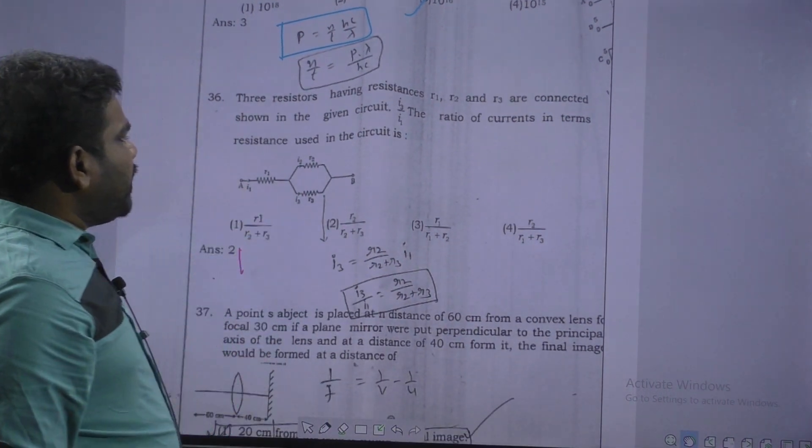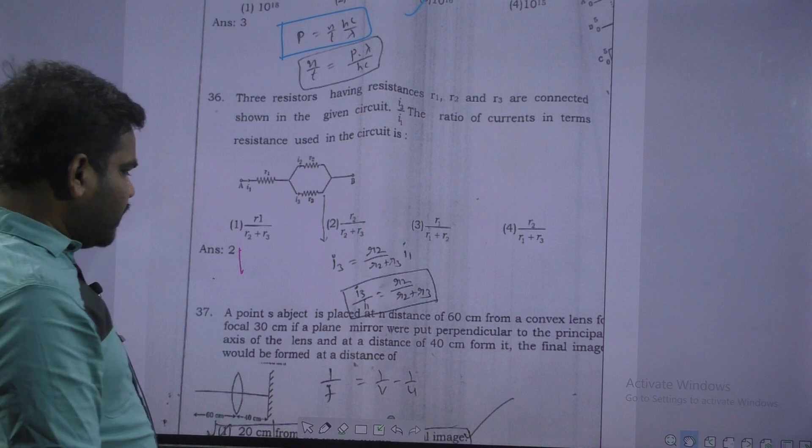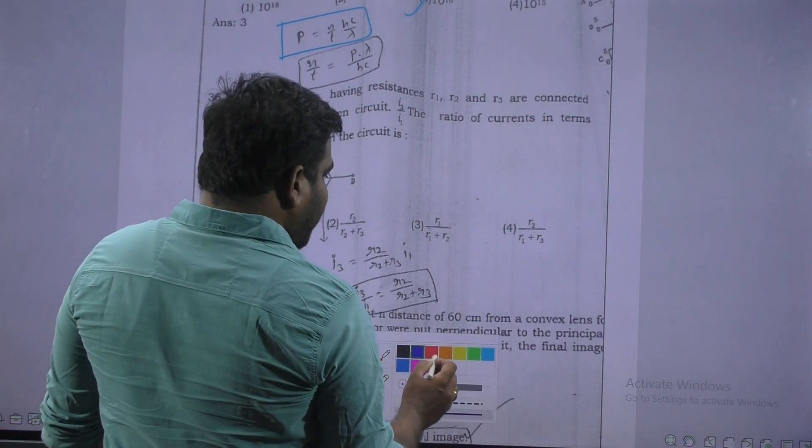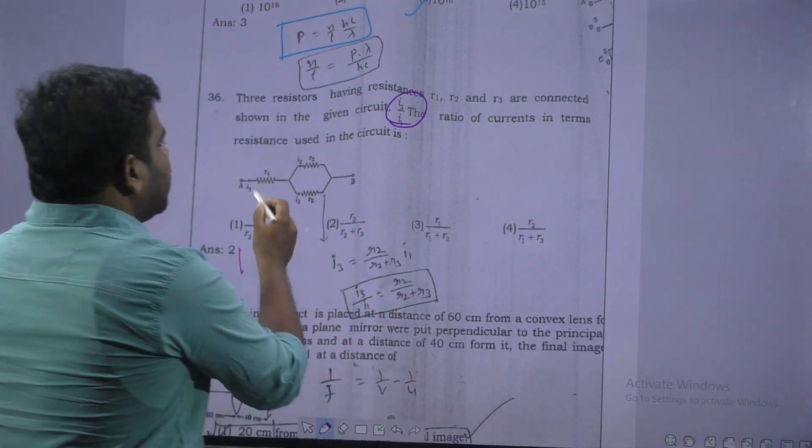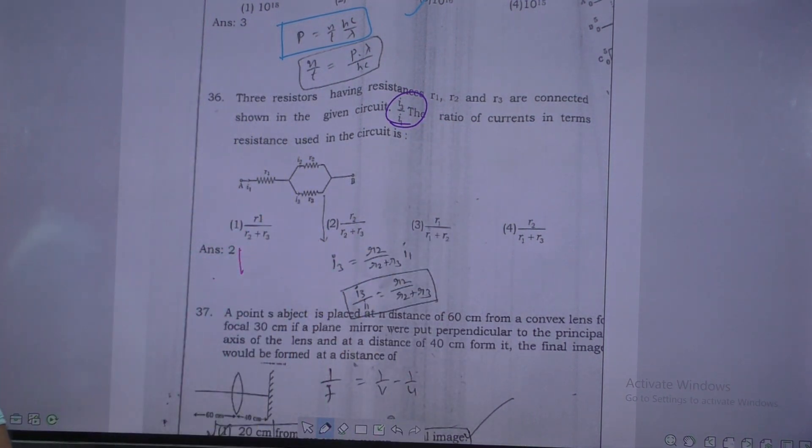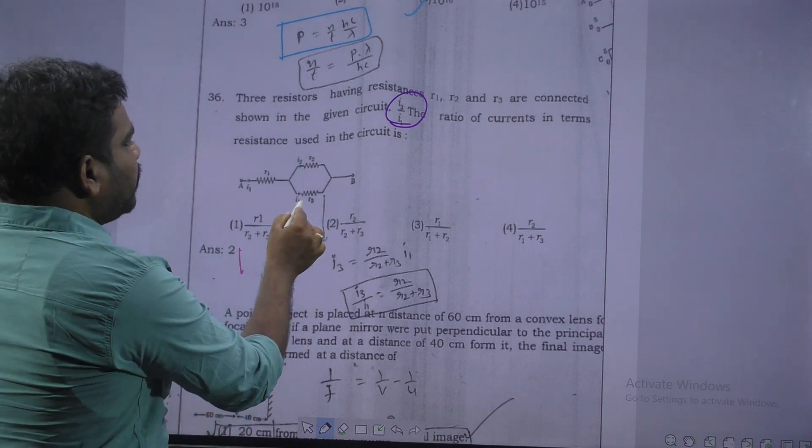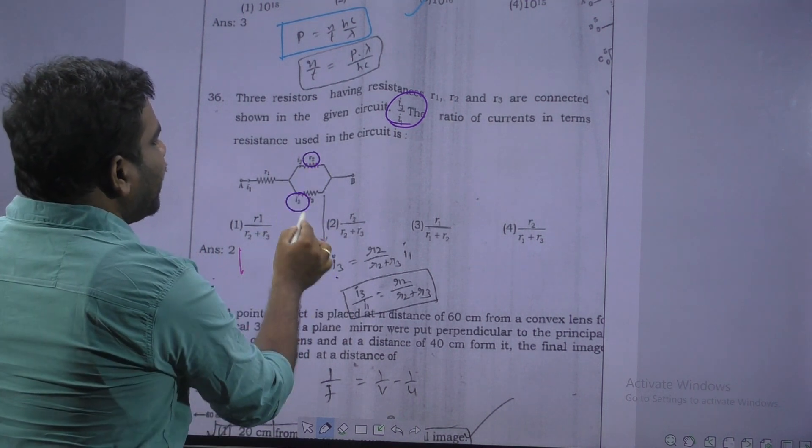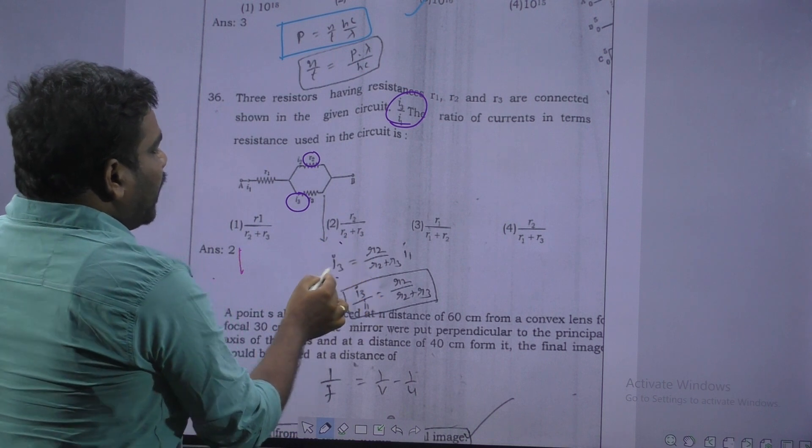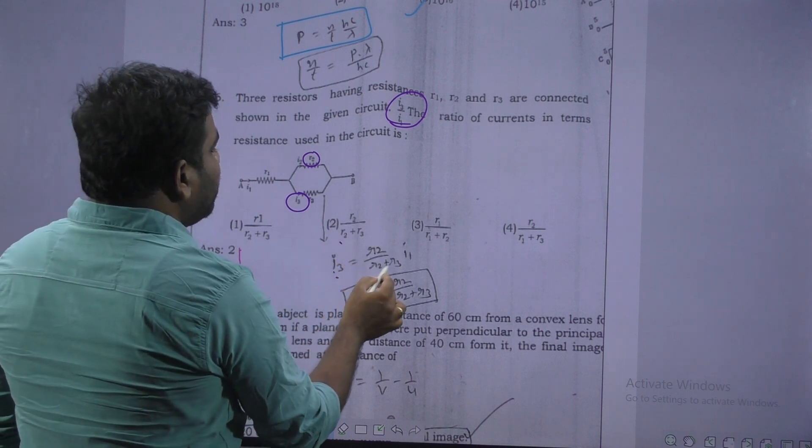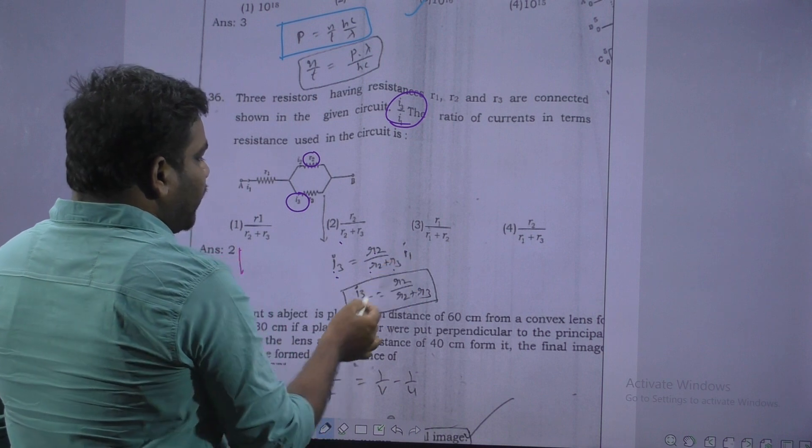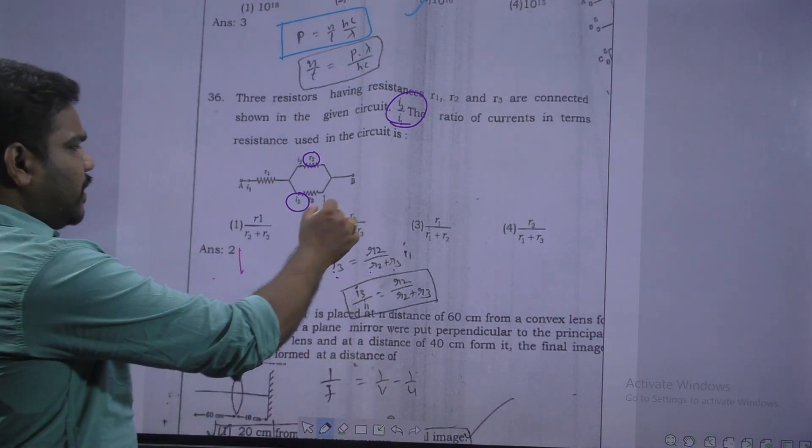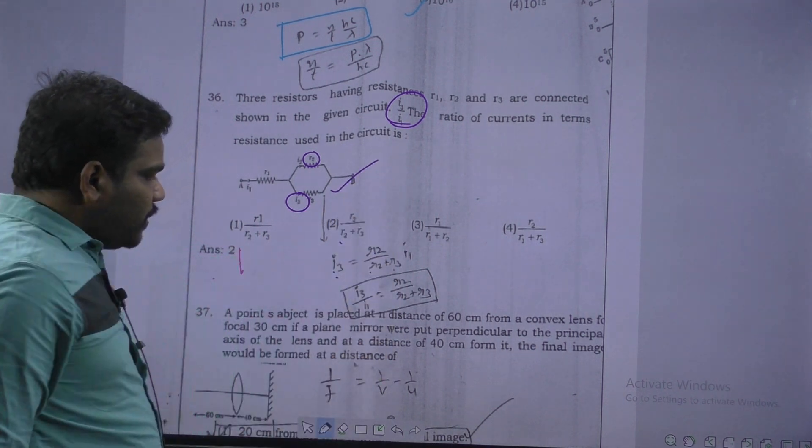Next question. This problem I3 by I1 is asked. Just apply here current divider rule. I3 is equal to R2 by R1 plus R2 into I1. Just I3 by I1 left side. You will get R2 by R1 plus R2.